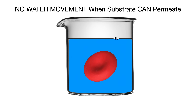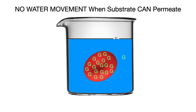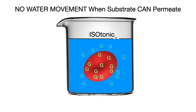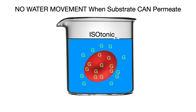Now, this is the most important thing to know to get these questions correct every time. When solutes can permeate the cell membrane, solute will move down its concentration gradient from high to low concentration and equilibrate itself — meaning reach isotonicity on its own — creating equal concentration inside and outside the cell without water having to move in or out, and thus without the cell swelling or shrinking.